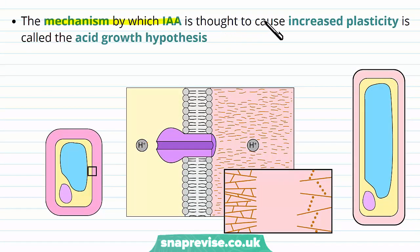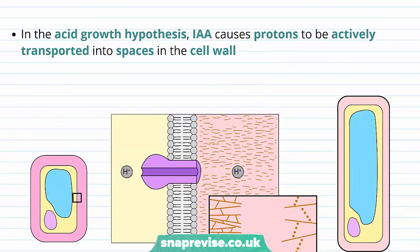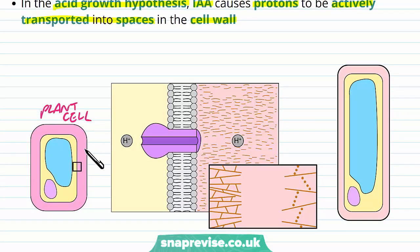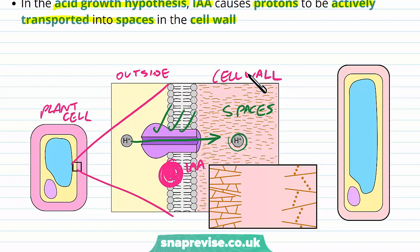The mechanism by which IAA is thought to cause this increased plasticity is a process called the acid growth hypothesis. It involves hydrogen ions, and it's called a hypothesis because it's still a theory or model. In the acid growth hypothesis, the IAA causes protons to be actively transported into the spaces in the cell wall. The IAA chemical binds and activates a pump which sends protons actively into these spaces, using ATP in the process.